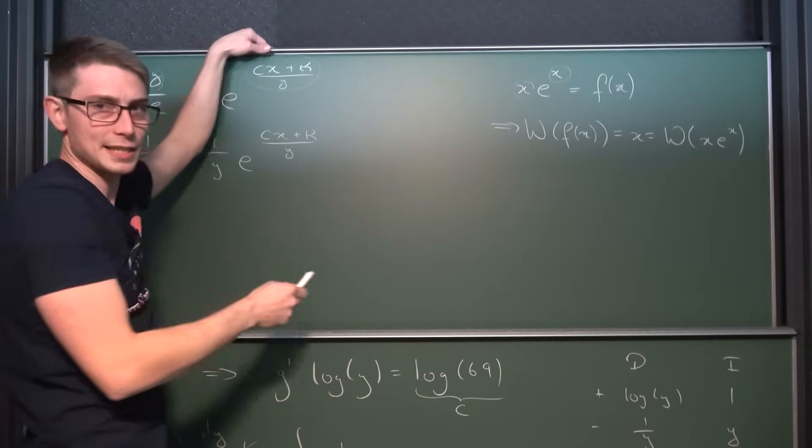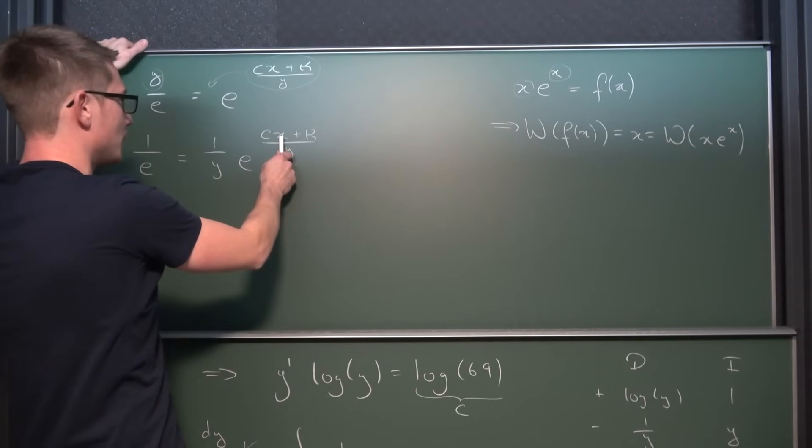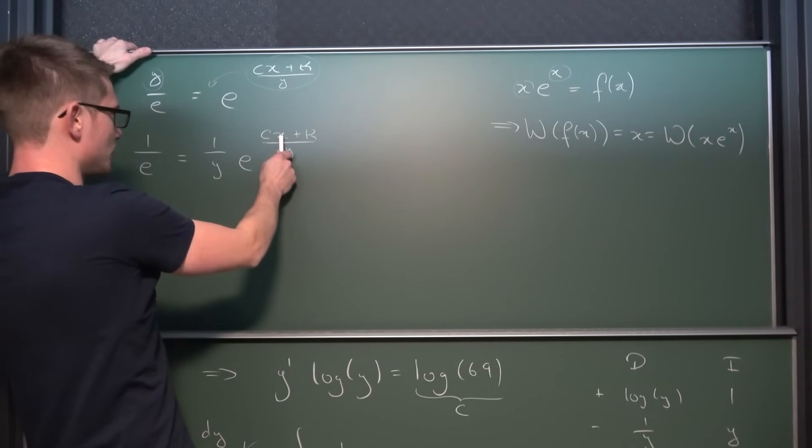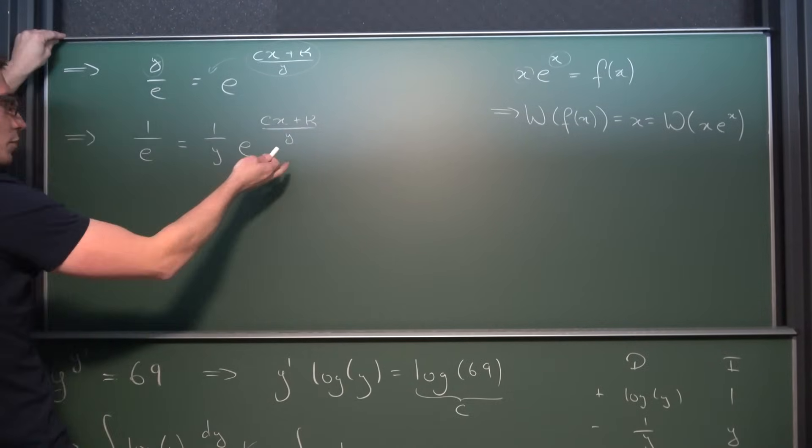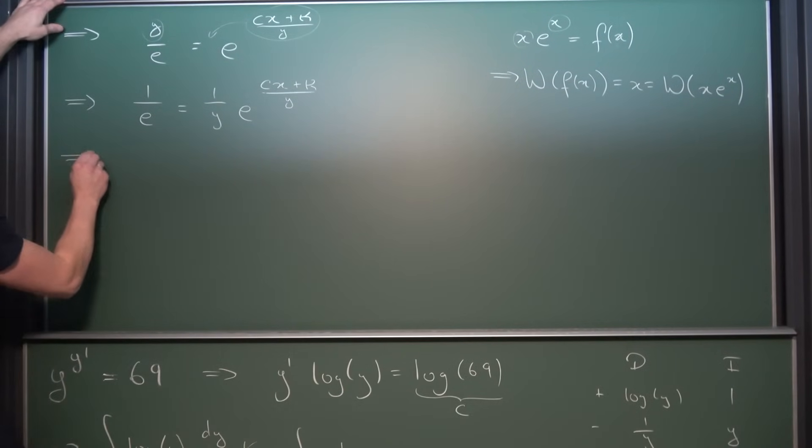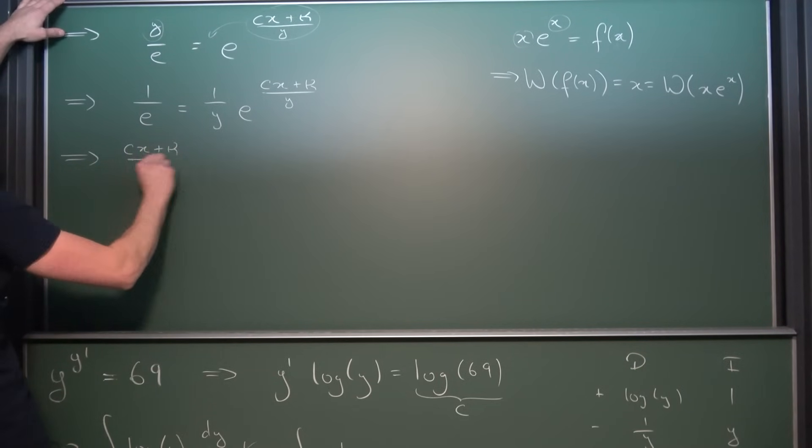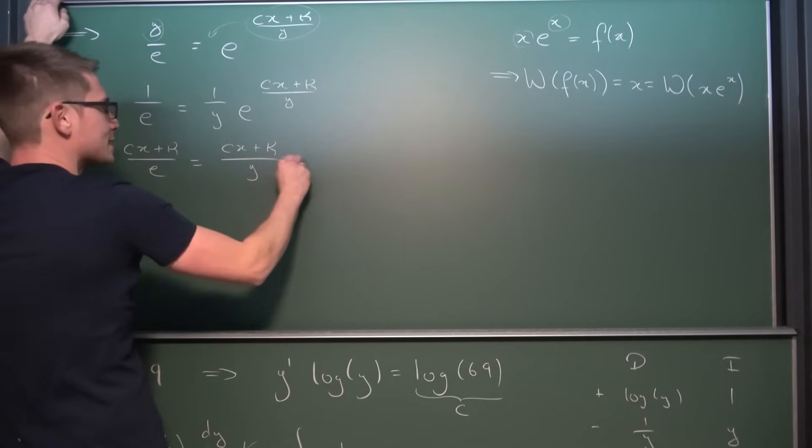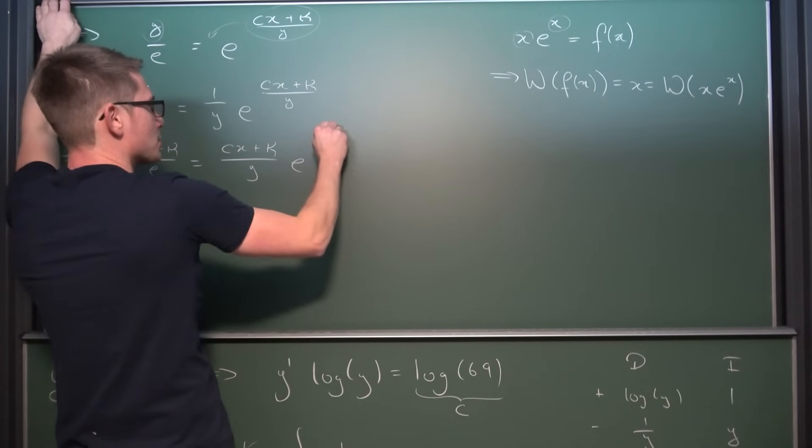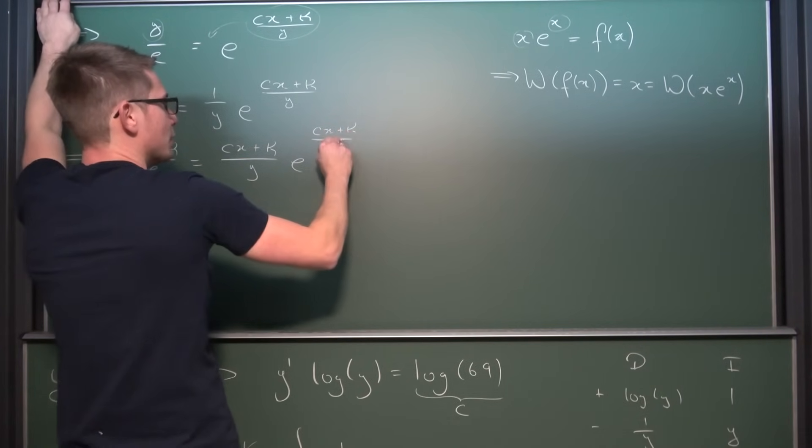And the only thing that is missing now is the c times x plus kappa up here. How can we get it? Well obviously by multiplying both sides by it under certain conditions. Namely that x is not equal to negative kappa divided by c. This is not something that we want. If this holds then we can multiply both sides by it. Giving us c times x plus kappa divided by y times e to the c times x plus kappa divided by y.